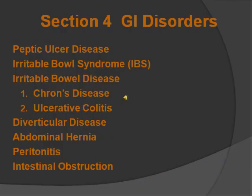Here are some GI disorders we're about to discuss: peptic ulcer disease, IBS, IBD — which includes Crohn's and ulcerative colitis — diverticulitis, hernias, peritonitis, and intestinal obstruction.